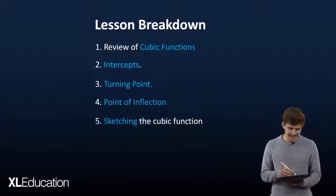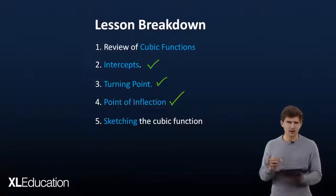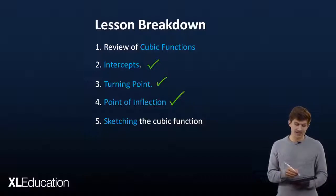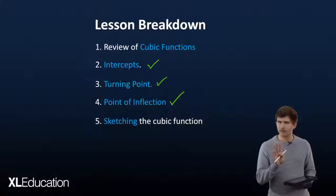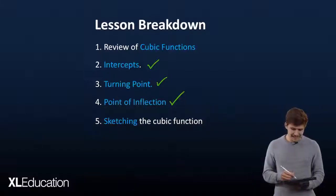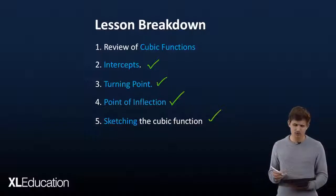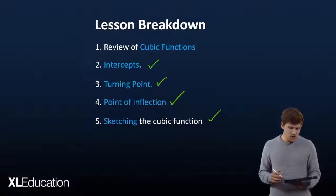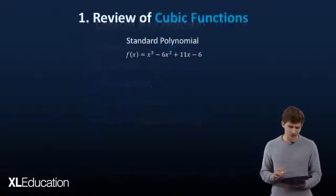The first item will be the intercepts — that's actually two because it'll be an x and a y intercept. Next will be the turning points, and finally the point of inflection. Once we've got all four of those factors, we can easily sketch our cubic functions and there we go — those marks are in the bank.